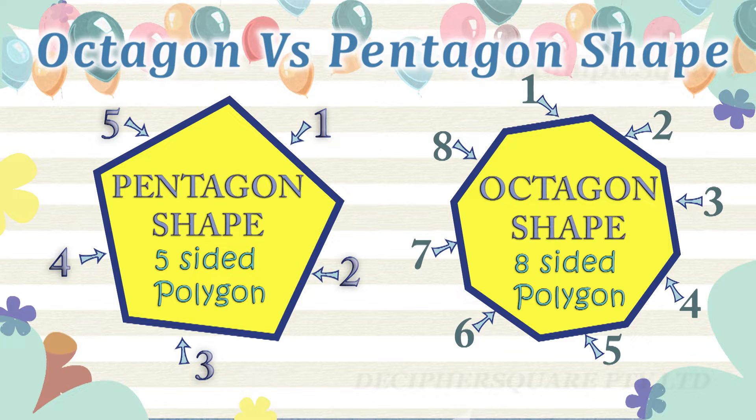A polygon is a two-dimensional flat shape having three or more straight sides.